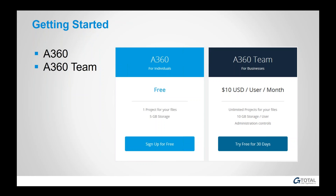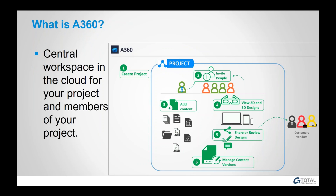There are two versions: A360 and A360 Team. The A360 for individuals is free to anyone — you can sign up, get 5 gigs of storage, and create a single project where you can upload files and share them. A360 Team is for businesses and costs $10 a month per user. Each user gets 10 gigabytes of storage and unlimited projects, plus admin controls where you can assign users as team members, project contributors, and administer your site.